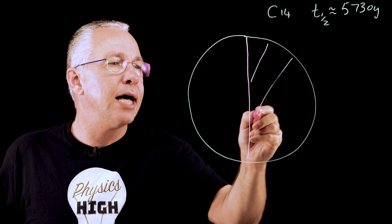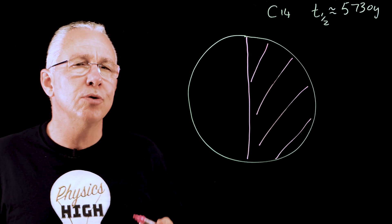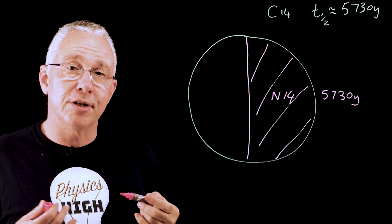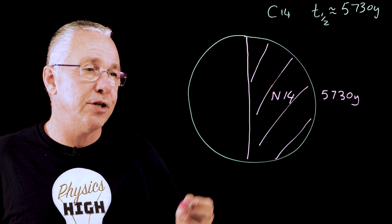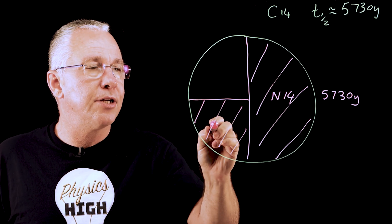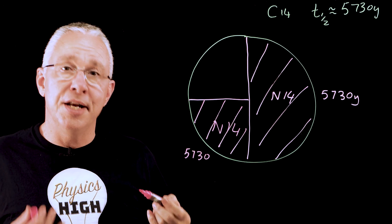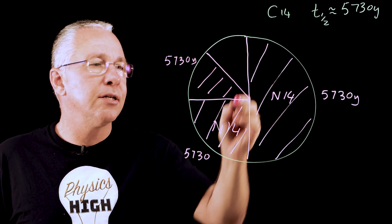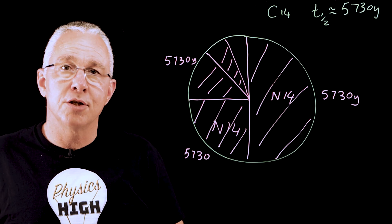half of it has decayed into nitrogen-14, leaving half of carbon-14 left over. After another 5,730 years, another half-life, half of what I have left over is now nitrogen-14. Another half-life means a half of that again. And another half-life, half again. So,